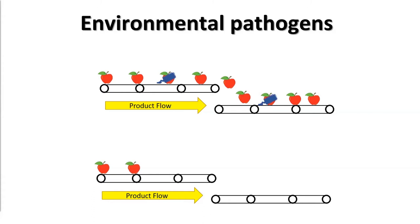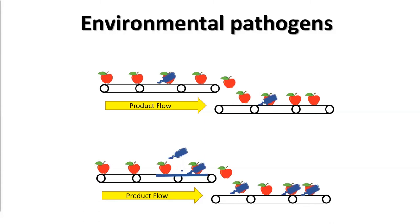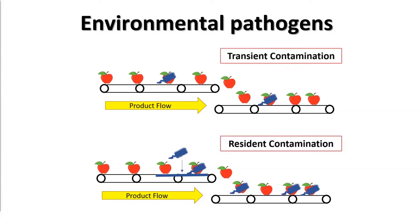In contrast, when we have resident contamination, we have a microbial pathogen that has built up on a food contact surface. In this scenario, any piece of food that contacts that contaminated surface can then become contaminated itself. So in this situation with resident contamination, we have much higher levels of contaminated products coming out of the facility.